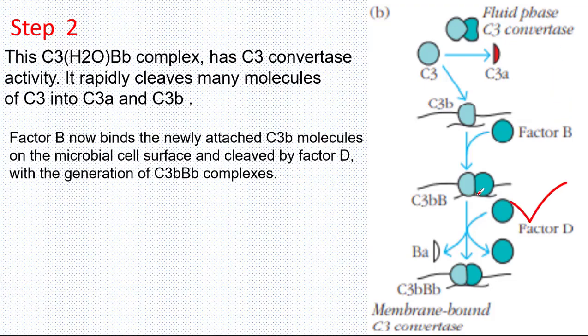Factor B now binds the newly attached C3B molecules on the microbial surface and is again cleaved by Factor D protease into BA subunit and BB subunit. BA diffuses away just like the previous step, and BB subunit remains attached to C3B molecules, forming a C3BB complex, which acts as a C3 Convertase.